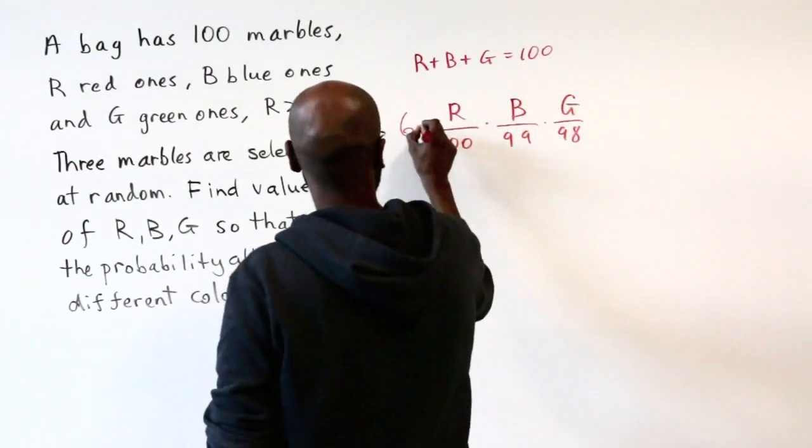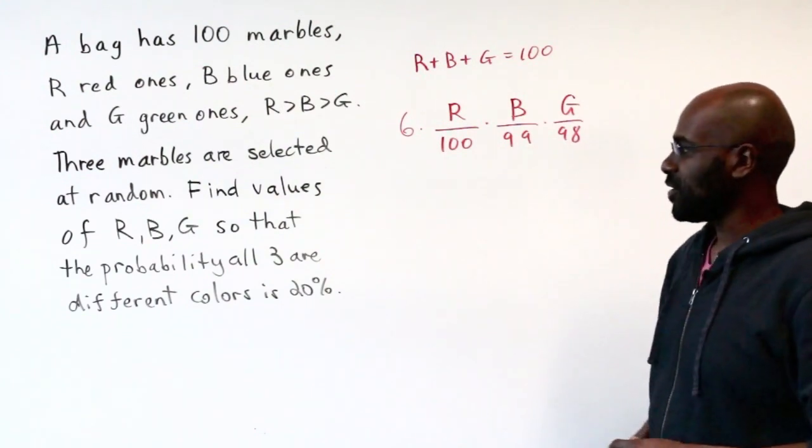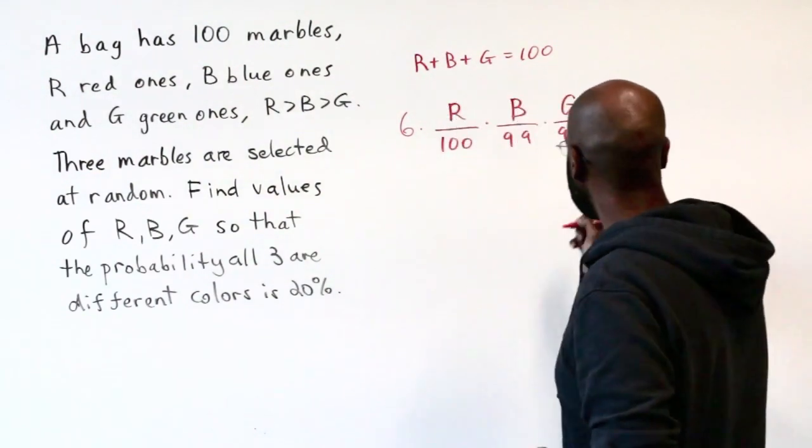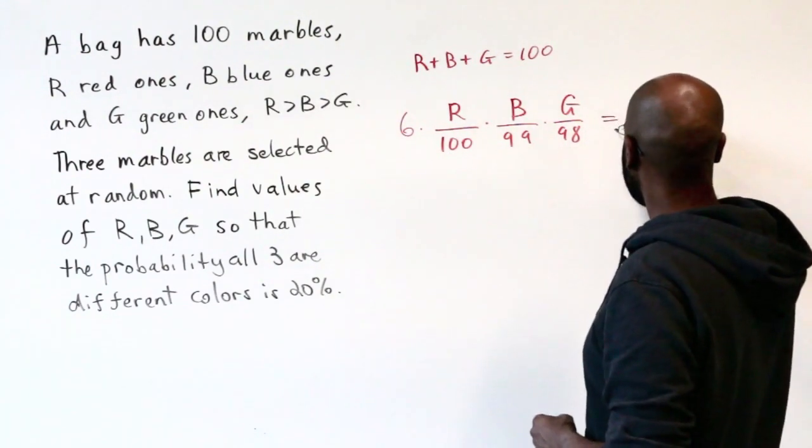So the total probability is six times this quantity right over here. And we're given that this is exactly 20%, or one-fifth, so that would mean this quantity here is one-fifth.